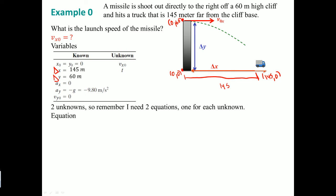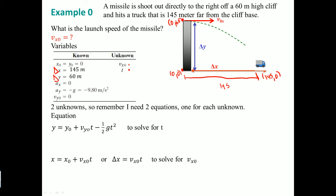You'll notice a dilemma: there are two unknowns — T and vx₀ — so you need two equations. The first equation solves for T. As shown in part one, we rearrange the kinematic equation for vertical displacement. Terms with initial vertical velocity go to zero, leaving us with T equals the square root of (2 × 60 / 9.8), giving T ≈ 3.46 seconds.